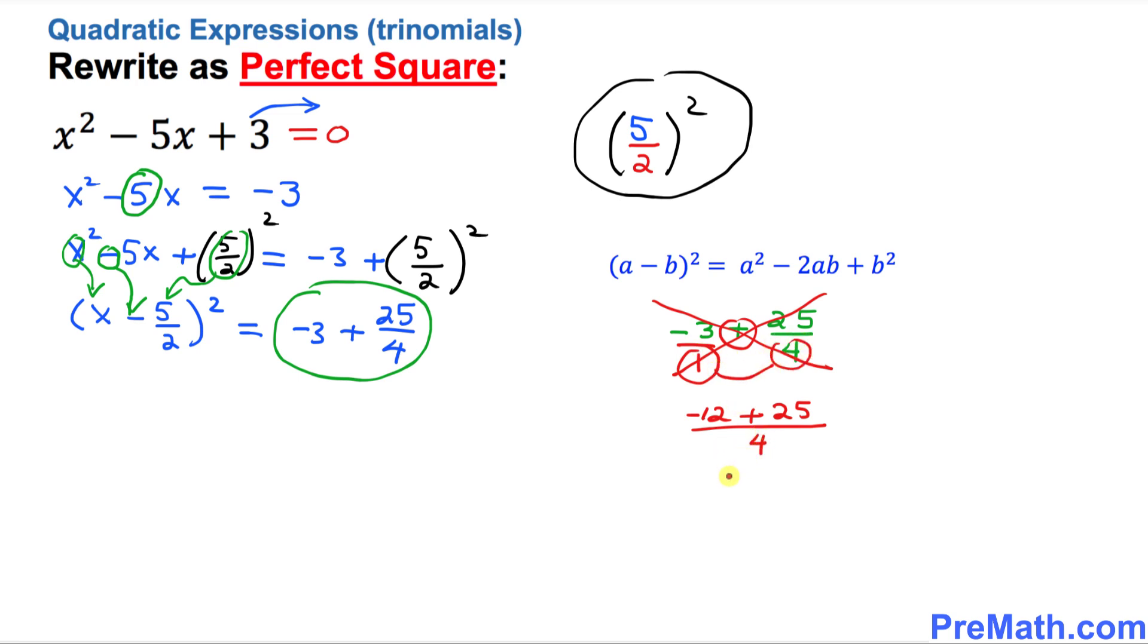And then 1 times 25 is 25 divided by 1 times 4, which becomes 4. If you simplify on the top, that's going to give you 13 over 4. This is our simplified form.